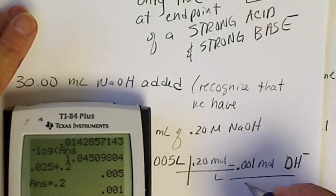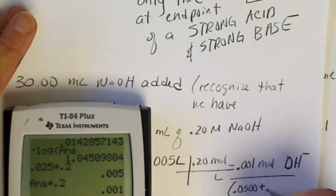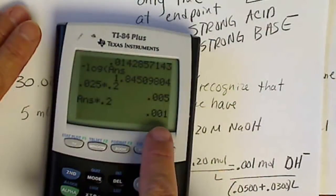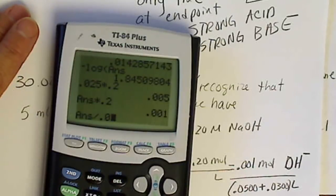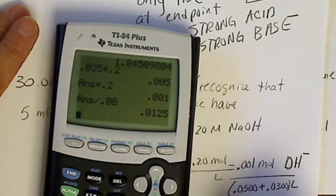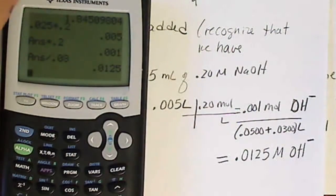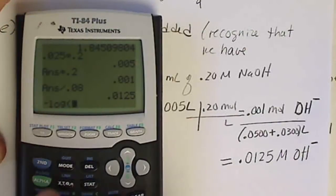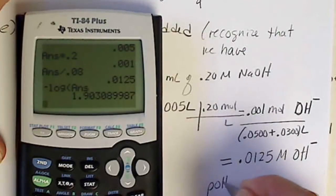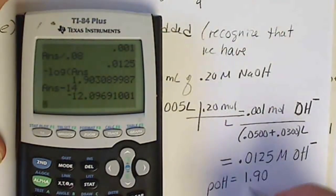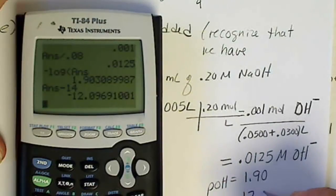We divide the excess hydroxide by the total volume: we started with 50 milliliters of acid and added 30 milliliters of base, giving 0.08 liters total. So the concentration of OH⁻ is 0.001 moles divided by 0.08 liters. Taking the negative log of that gives pOH = 1.90. So the pH is 14 minus 1.90 = 12.10.